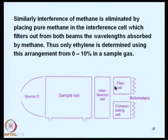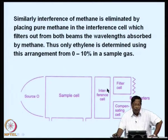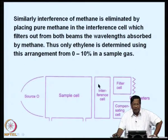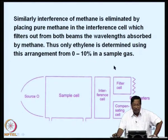For example, the interference of methane can be eliminated by putting pure methane in the interference cell, which filters out from both beams the wavelength absorbed by methane. Thus, only ethylene is determined using this arrangement, from 0 to 10 percent in a sample gas.